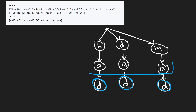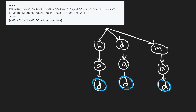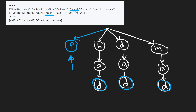Now let's search. Searching 'pad': we start at the root and look for 'p'. We only have 'b', 'd', and 'm', so there are no words starting with 'p'. We immediately return false, as shown in the output.